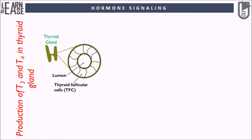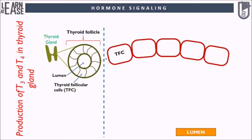The thyroid gland consists of thyroid follicles, which are small spherical groupings of cells known as thyroid follicular cells that play the main functional role. The central core of the thyroid follicle is called the lumen, which is gelatinous, viscous and rich in iodine. The exterior of the thyroid follicle can directly interact with blood. Synthesis of the thyroid hormones by the thyroid follicle is explained here with animation.